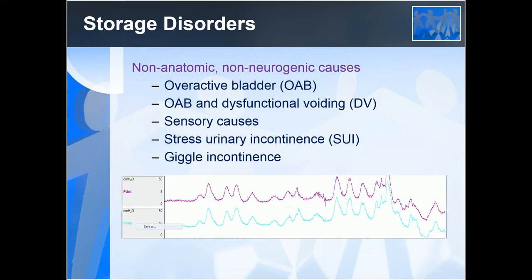Overactive bladder in children has symptoms very much in parallel with adults — going to the toilet a lot and urgency. In children, urgency gives itself away because they posture. Sometimes this extra pressure inside the bladder during filling is accompanied by something odd in the way urine is passed during voiding — that's called dysfunctional voiding. Be aware that in older literature dysfunctional voiding was used as a term for everything bladder-related in children, but it actually refers only to the emptying phase. There can also be sensory causes — heightened or reduced sensitivity from the urothelium or bladder filling can change storage. And stress incontinence and giggle incontinence are additional categories.